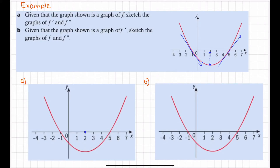After the minimum point, the function is increasing and has a positive gradient, which means the graph of the derivative will be above the x-axis in the positive space. The graph doesn't have to be exact in terms of its y-values, but it just has to cross at the intercepts correctly and be in the correct space above or below the x-axis, depending on whether the gradient is positive or negative.